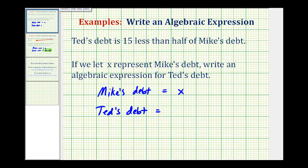It's helpful if we look at this in reverse order, meaning we'll first write an expression for half of Mike's debt, and then we'll deal with the fifteen less. To find half of Mike's debt, or half of x, there are two ways of doing this: we could multiply x by one half, or divide x by two.